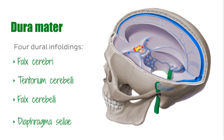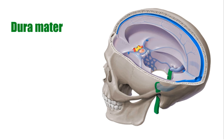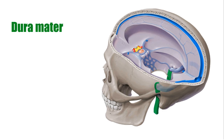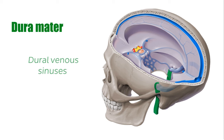And the diaphragma sellae, a small sheet of dura covering the pituitary gland. The separation of the two dural layers at the dural infoldings also creates cranial venous channels, spaces known as dural venous sinuses.